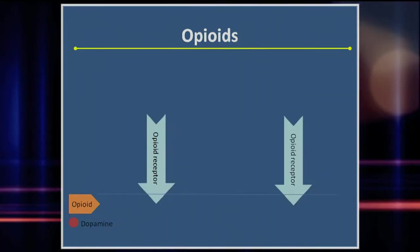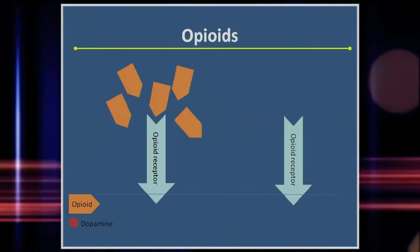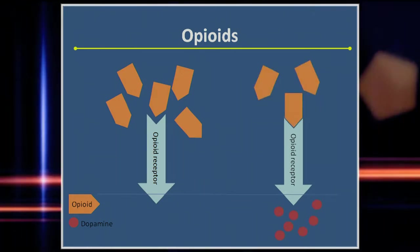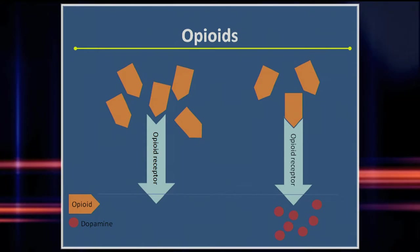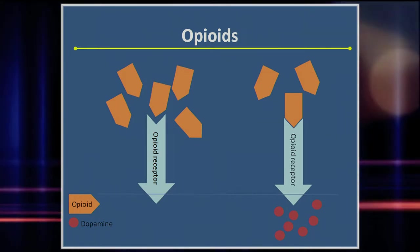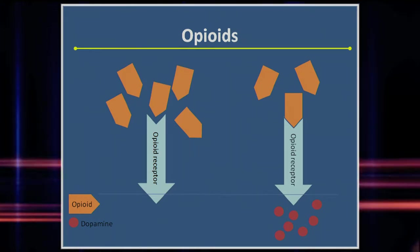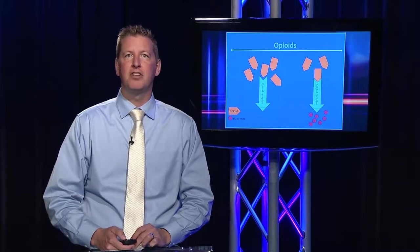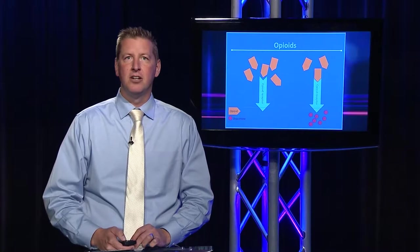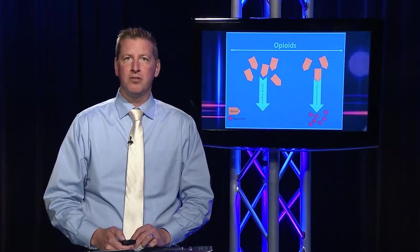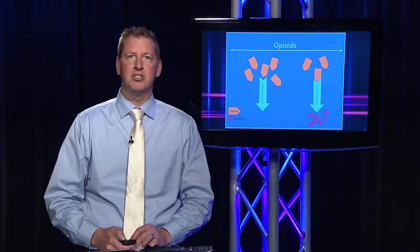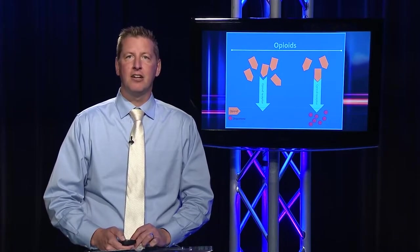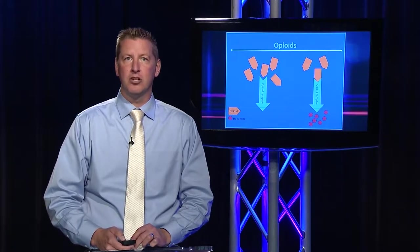Opiate drugs, including heroin and oxycodone, bind to special receptors in the brain, inducing the release of a chemical called dopamine that is responsible for pain relief, euphoria, drowsiness, and a decreased respiratory rate. In an overdose, breathing stops completely, and within minutes, the individual will die without intervention. While some overdoses are purposeful, many illegally obtained drugs are ingested without knowing the exact dose, or even the exact drug taken, increasing the risk of accidental overdose.